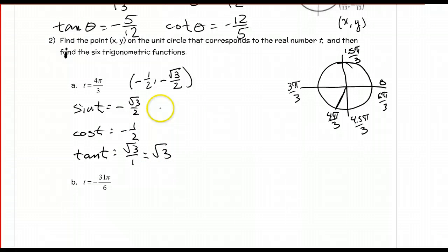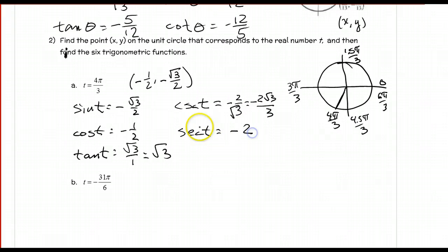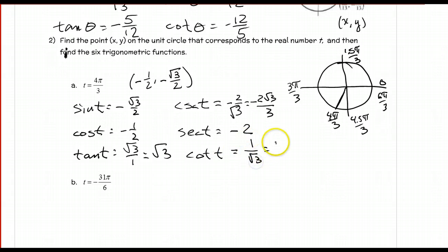For the reciprocals: cosecant of t = negative 2 over root 3, which simplifies to negative 2 root 3 over 3. The secant of t = negative 2, the reciprocal of negative 1/2. And cotangent of t = 1 over root 3, which simplifies to root 3 over 3.